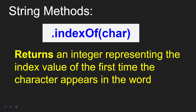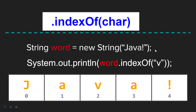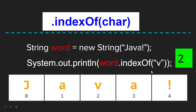We also have what's called indexOf(), and it needs to have a character in it. What this is going to do is return an integer representing the index value of the first time the character appears in the word. If we had our Java string and we called word.indexOf('v'), it's going to look in Java, find the first time V appears, and return that index value of two. That's what would print to our screen.